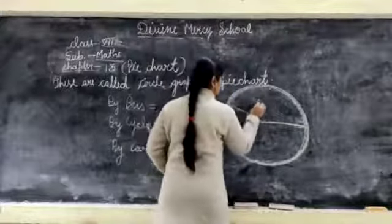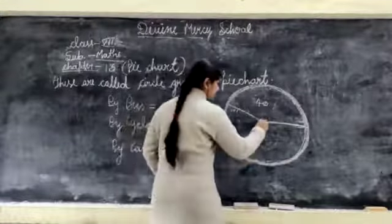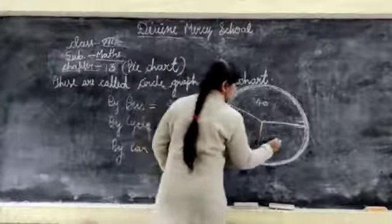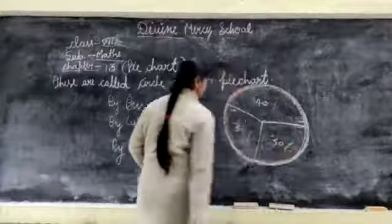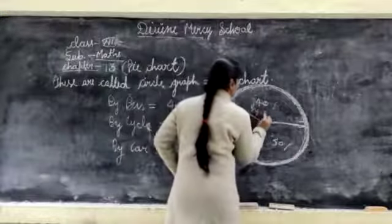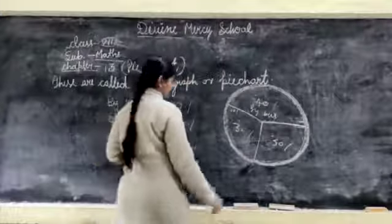This is 30 percent. So this is 30 percent. So this is 30 percent. That means this is by bus. So students are traveling by bus, 40 percent. 40 percent students are traveling by bicycle.